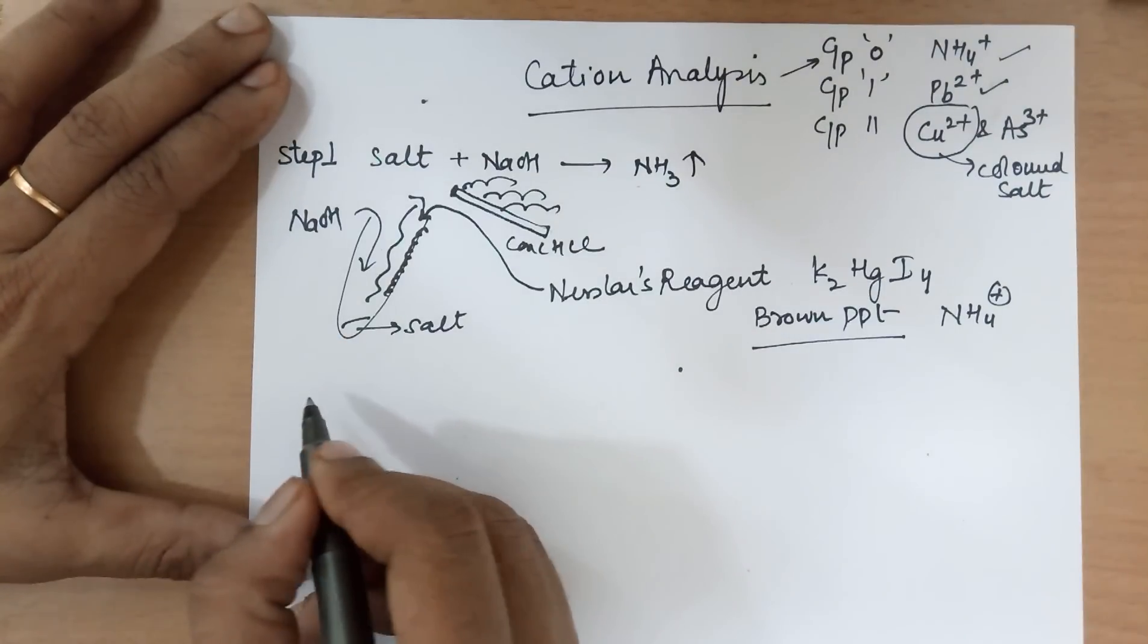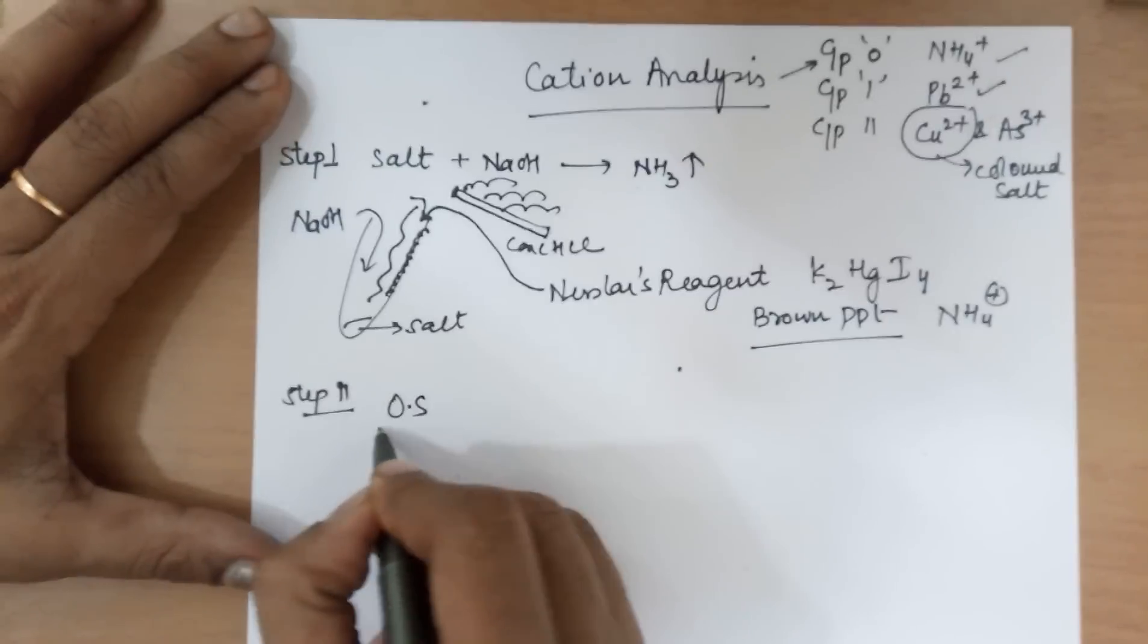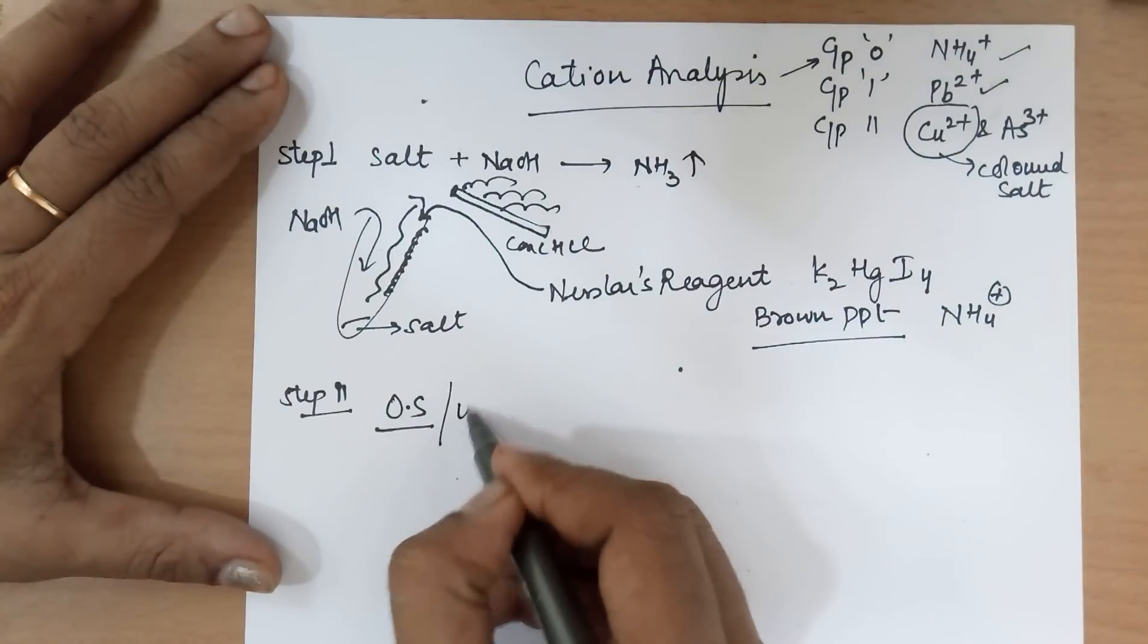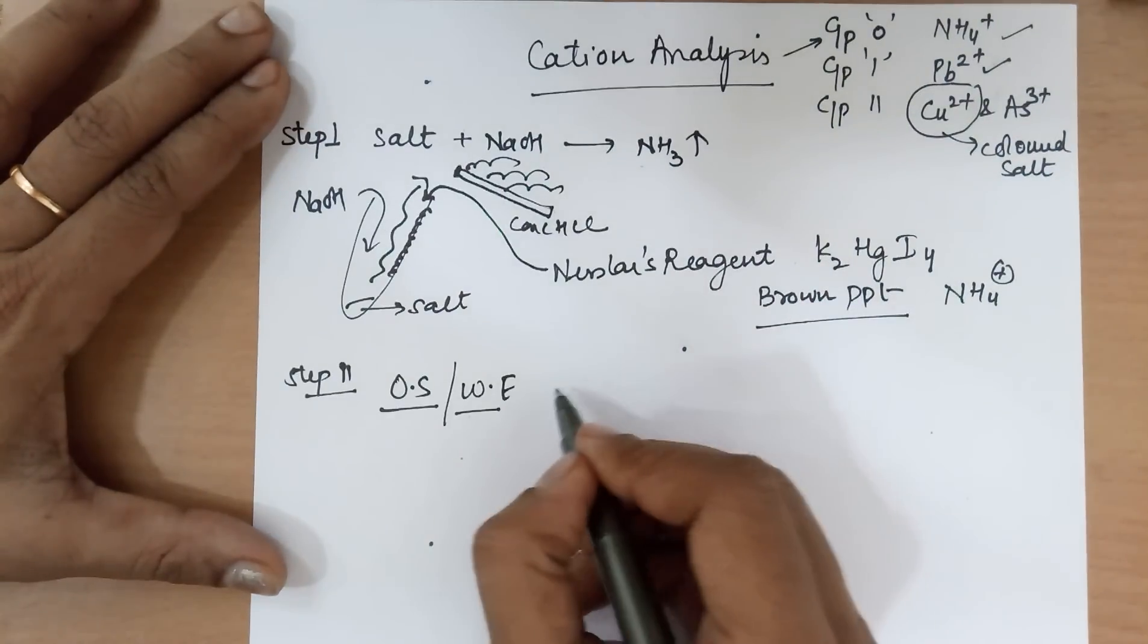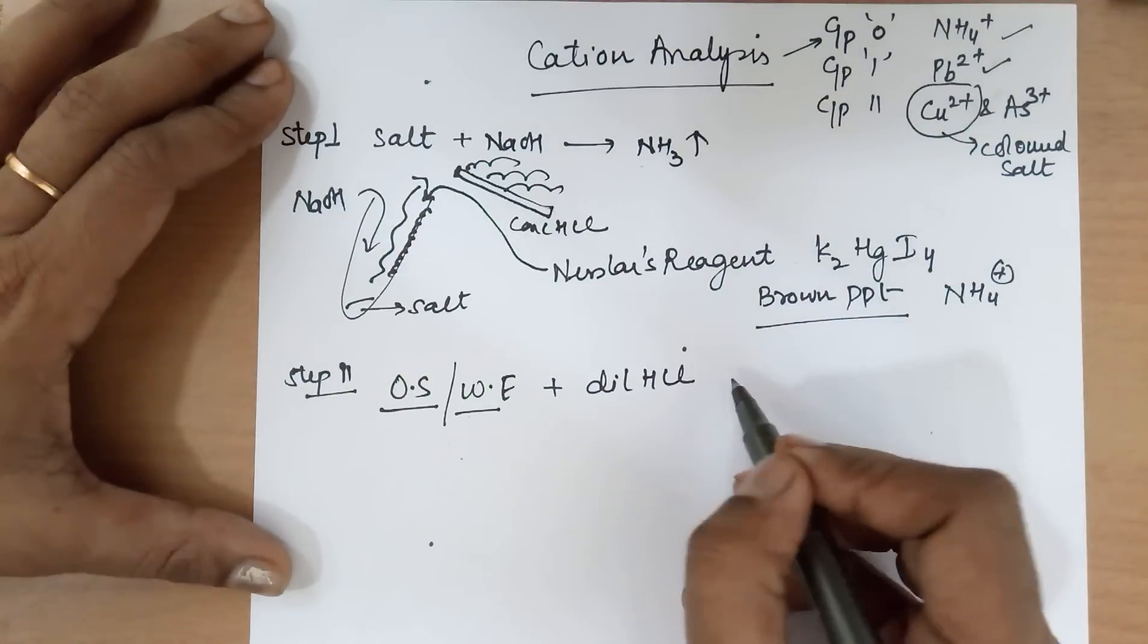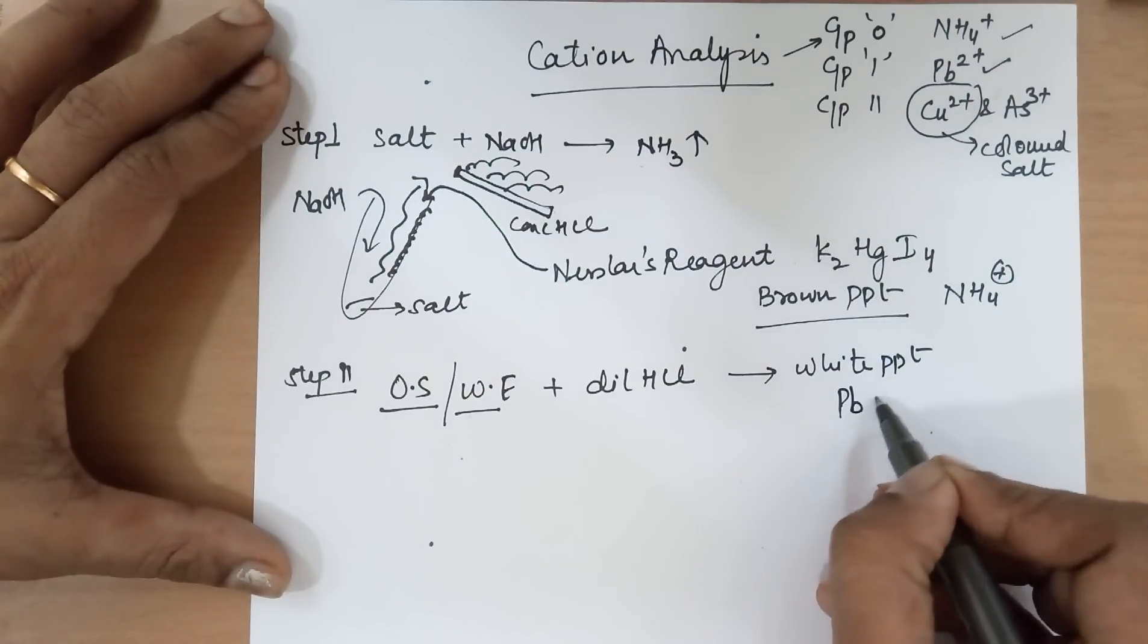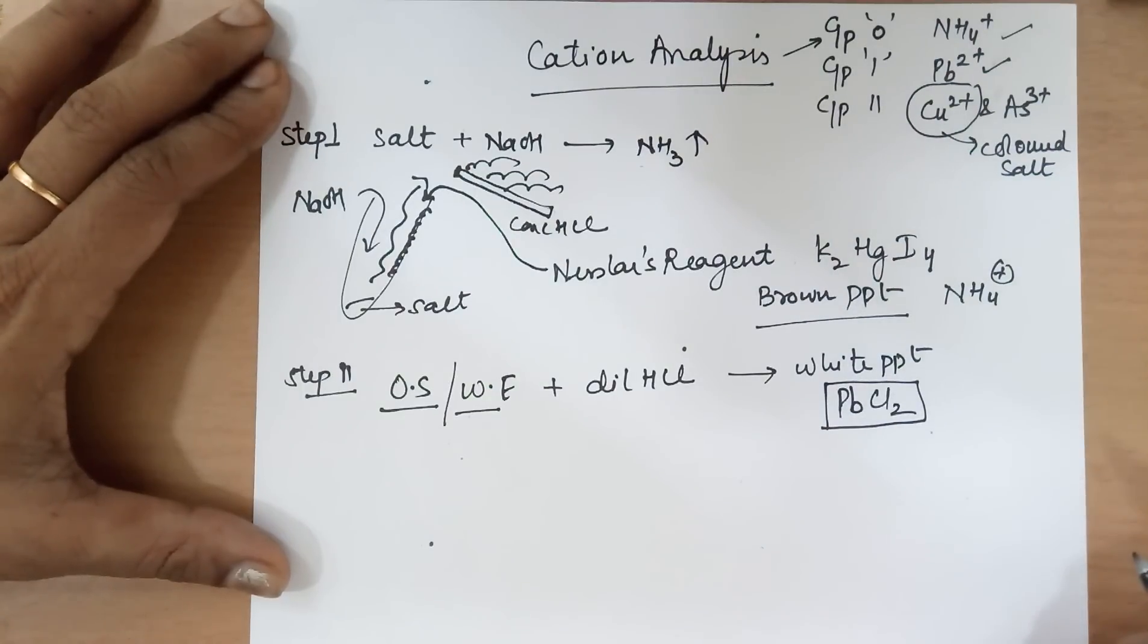That is how we go about group 0. The second step is for group 1. In that case, you require the OS. OS stands for Original Solution. Or, in books, it is also written as WE, where WE stands for the Water Extract. To this, you add dilute HCl, 1 ml. How much is 1 ml? Around 1 cm in length in your test tube is roughly 1 ml. On adding this, if you get a white PPT, this white PPT would be for PbCl2.